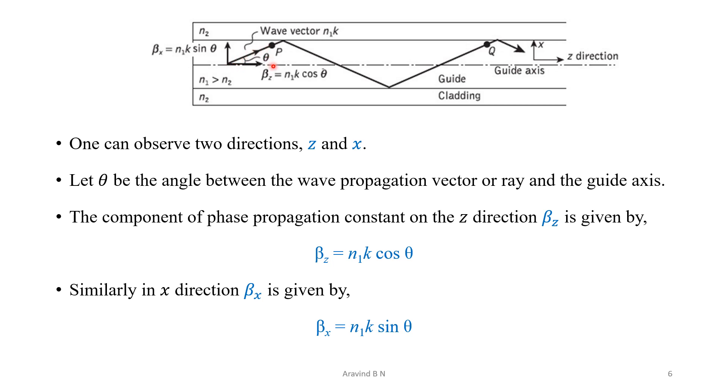Now, the phase constant in the z direction is represented by the term beta z and this beta z will be equal to n1 k cos theta. Similarly, in the x-axis, it is represented by beta x and it is given by beta x is equal to n1 k sin theta.